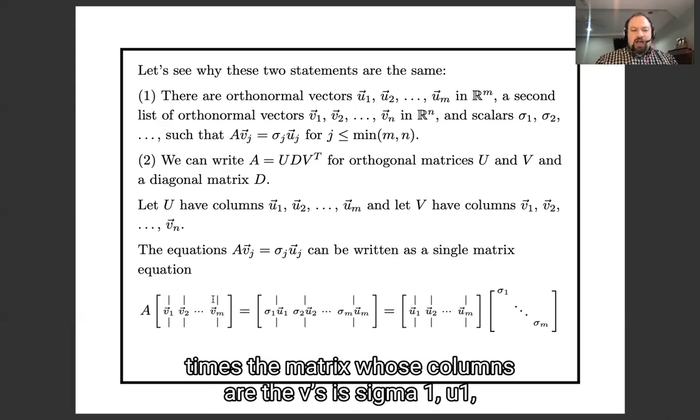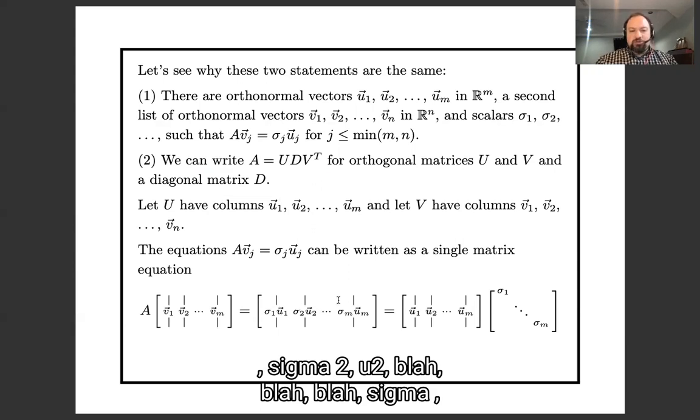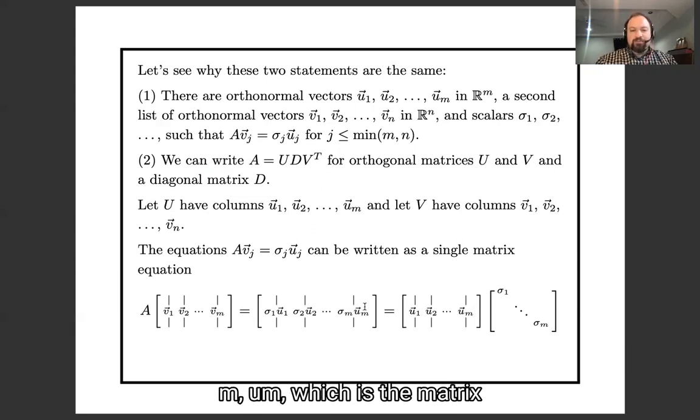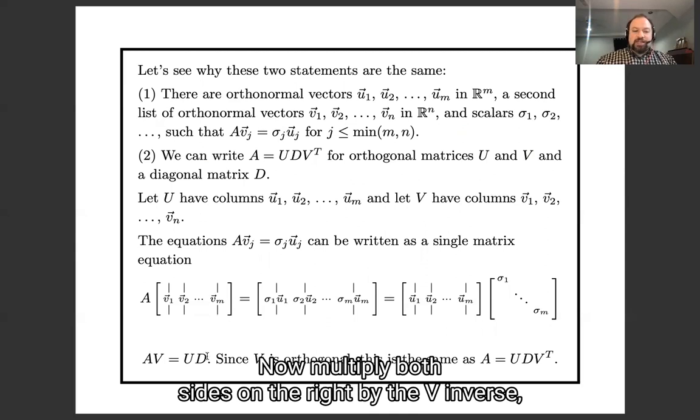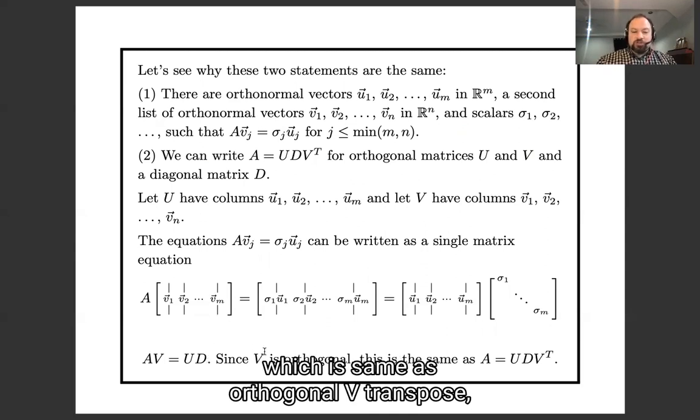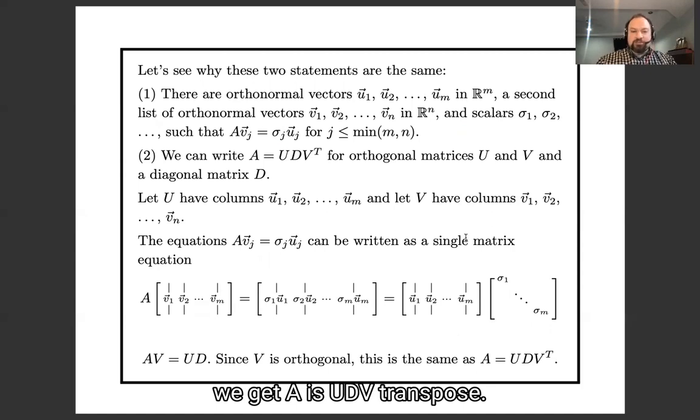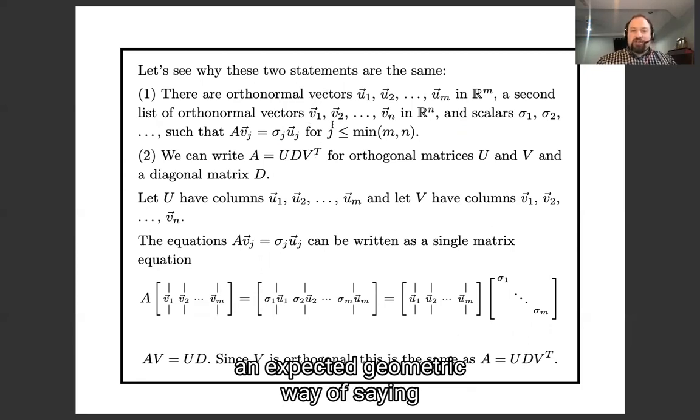A times the matrix whose columns are the v's is σ1u1, σ2u2, blah blah blah, σmum. Which is the matrix whose columns are the u's times the diagonal matrix of sigmas. So this says that AV = UD. Now multiply both sides on the right by V inverse, which is V transpose. And we get A = UDV^T. So these are a compact matrix way or an expanded out geometric way of saying the same thing.